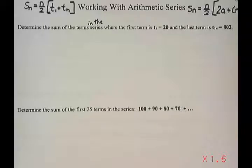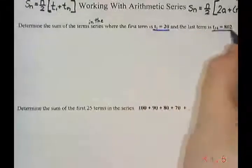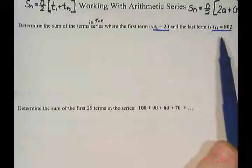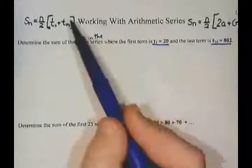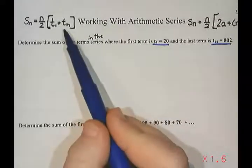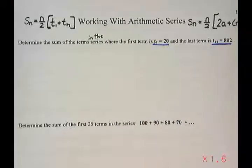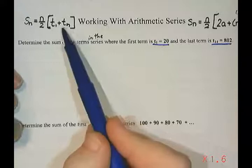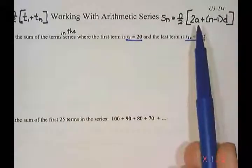So in this question I know term one is 20 and I know term 14 is 802, and this is the first term and this is the last term. So if I have the first and the last term, the easiest formula is to use this one. So if I have the first term and I have the last term and hopefully I know how many terms I have, I will use this formula. Now if I don't have the first and last term, that tends to be when I use that formula.